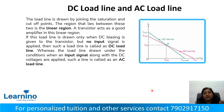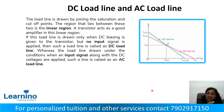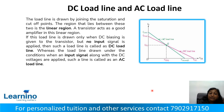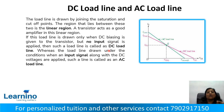The load line is drawn by joining the saturation point and the cut-off point, and the region that lies between these two points is the active region. If this load line is drawn only when the DC bias is given to the transistor but no input signal is applied, such a load line is called the DC load line.